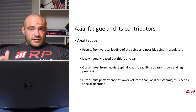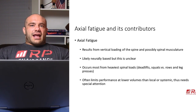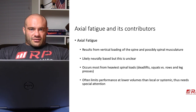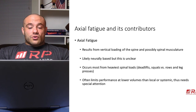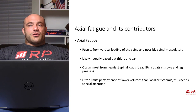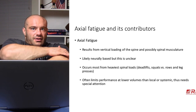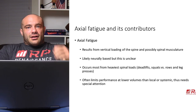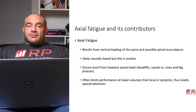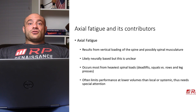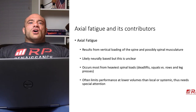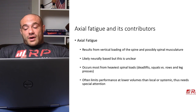Axial fatigue accumulates like all other sources. The biggest contributors are movements that heavily load the spine and spinal erector musculature. Deadlifts cause huge axial fatigue. Squats — especially heavier ones and low-bar squats — cause significant axial fatigue. Rows and to a lesser extent leg presses also contribute. The heaviest spinal loads cause axial fatigue the most. For example, curls with 90 pounds produce little axial fatigue, standing barbell shoulder presses produce more, and squatting — especially low bar — produces the most because weights are heavier and more back is involved.